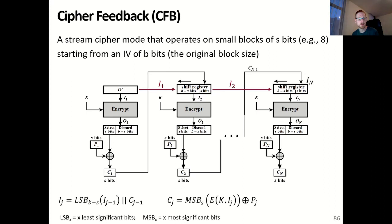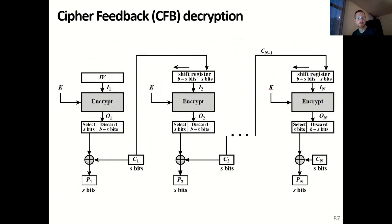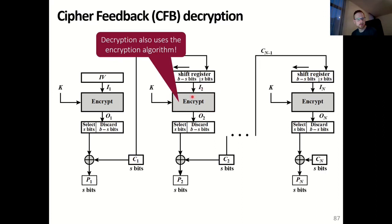Here you see mathematically how the I values — the inputs for the encryption algorithm — and the C values, namely the ciphertext, are calculated. The decryption works in the inverse way, and something important to note is that for decryption we don't need the decryption algorithm — we also use the encryption algorithm. So for example when using AES, only an implementation of the encryption algorithm is needed, which is beneficial because the encryption algorithm of AES is more computationally efficient than the decryption algorithm, due to the mixed columns step. This allows cipher feedback mode to be implemented more efficiently than, for example, electronic codebook mode, especially for decryption.